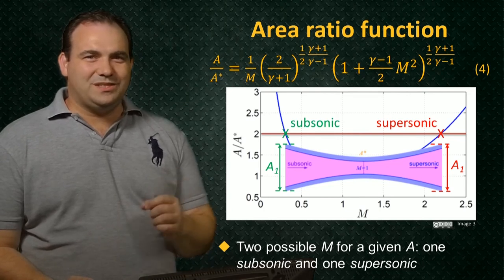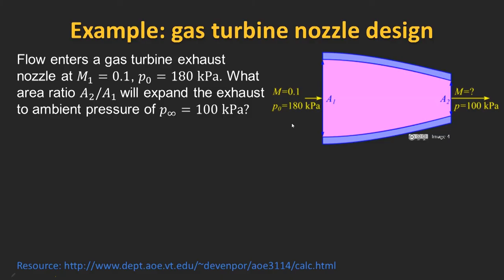Let's put this knowledge to use by solving an example problem. Flow enters a nozzle from a gas turbine with a Mach number of 0.1 and a stagnation pressure of 180 kPa, which we'll label state 1. We need to design a nozzle which will accelerate that flow and expand it to a Mach number where the static pressure is 100 kPa to match ambient — state 2. The first thing we need to do is figure out what Mach number we need to expand the flow to in order to reach 100 kPa.